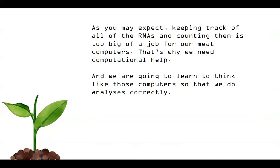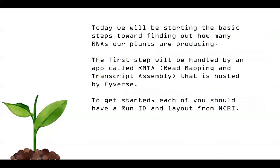To run this app, all you really need to get started is a run ID and a layout from NCBI. You can check out the tutorial if you don't remember how to do that, but you just need the accession number for a transcriptome experiment, and a little bit of information about how that experiment was run. You can get these from the NCBI site.